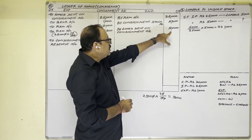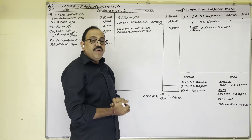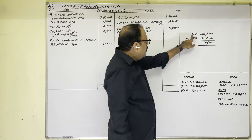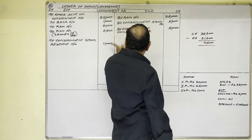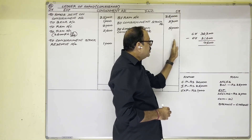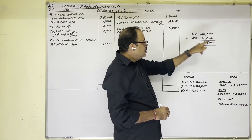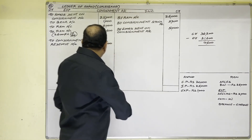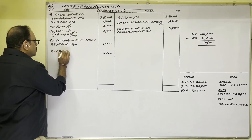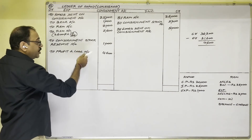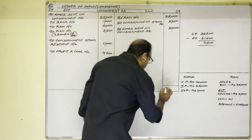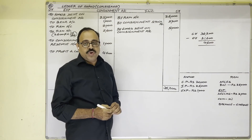Finally, we calculate the profit or loss in the consignment business. The credit column total is 36,200; the debit column total is 31,600. The difference is 4,600. Credit side has incomes and debit side has expenses. Income is more than expenditure, so the answer is profit. Since debit total is less, we write profit on the debit side: 4,600. The entry is: to profit and loss account. Both sides total to 36,200 rupees. This is the end of the video; hope it is helpful. Thank you.